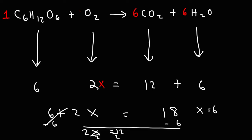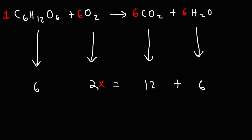Notice what happens if we put a 6 in front of O2. 6 times 2 is 12. And notice that we have a total of 18 oxygen atoms on both sides of the equation. So now, this combustion reaction is balanced.